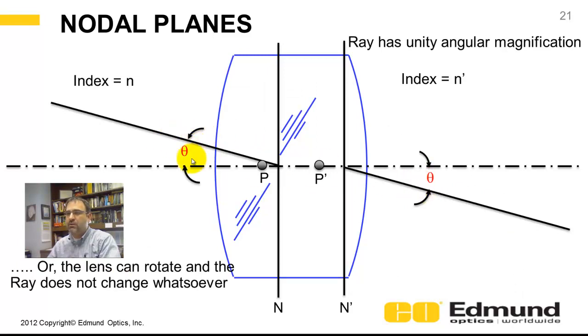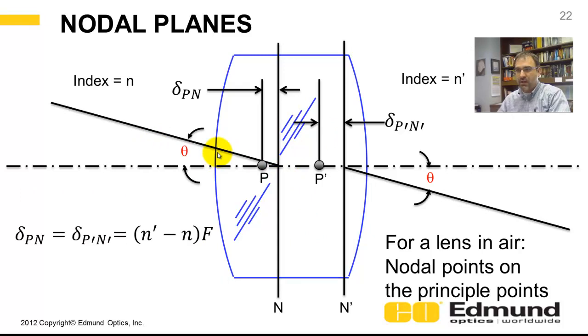How do you calculate where the nodal point, nodal plane locations are? They're referenced relative to the principal plane.